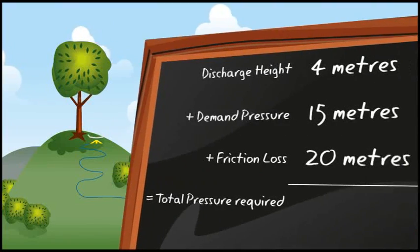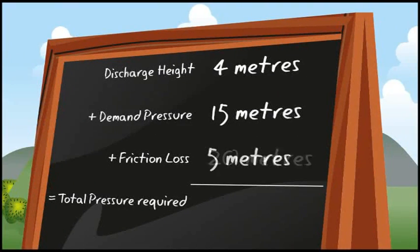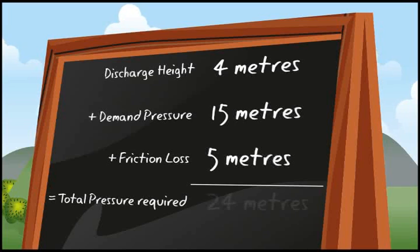On our calculations, we change our friction loss from 20 metres to 5 metres. Add these three amounts together and we have the new total amount of head or pressure required. In this case, 24 metres.